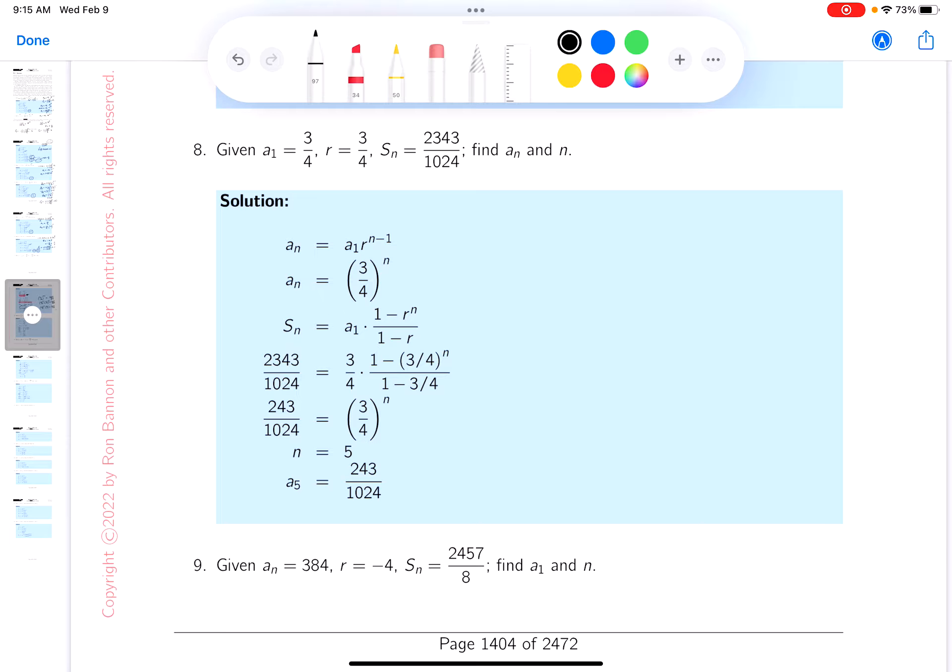So I guess what I should do is write down some things. I could write down what An is. What's An? Well, it would equal, let's see, it would equal A1, which is 3 quarters, times the R, which is 3 quarters to the n minus 1. So An, although I don't know what it is, I do know it's 3 quarters to the nth power. Let me show you where this is in the notes, it's right over here. That was pretty easy to come up with. And again, this is me just talking you through the solution to the problem.